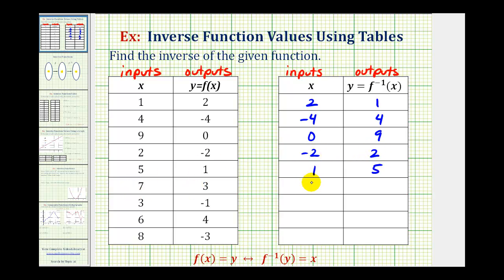If this is seven, three, this will be three, seven. If this is three, negative one, this is negative one, three.